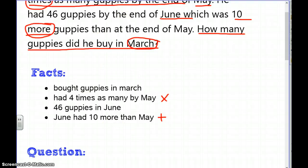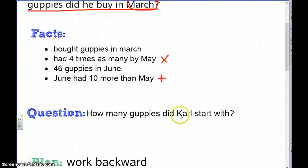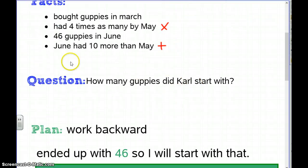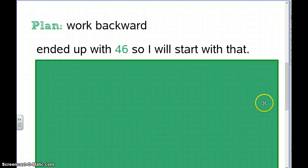Now I'll identify the question. I circled it: how many guppies did he buy in March? In my own words: how many guppies did Carl start with? That's what I'm trying to figure out.